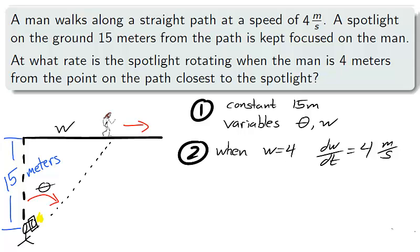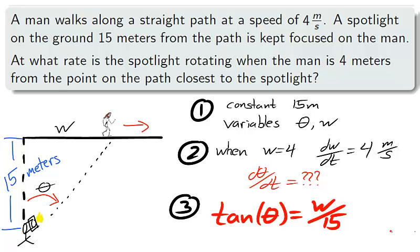One, we have a constant 15 meter distance between the spotlight and the path. The variables we will assign will be theta, the spotlight rotation, and w, how far the man has walked down the path. Two, we are given that when w is 4 meters, dw dt, the speed the man is walking, is 4 meters per second. Our goal is to find d theta dt at that instant. Three, we have diagrammed a right triangle with angle theta, opposite length w, and adjacent length 15. And the equation relating these variables is tangent theta equals w over 15, our opposite over adjacent.